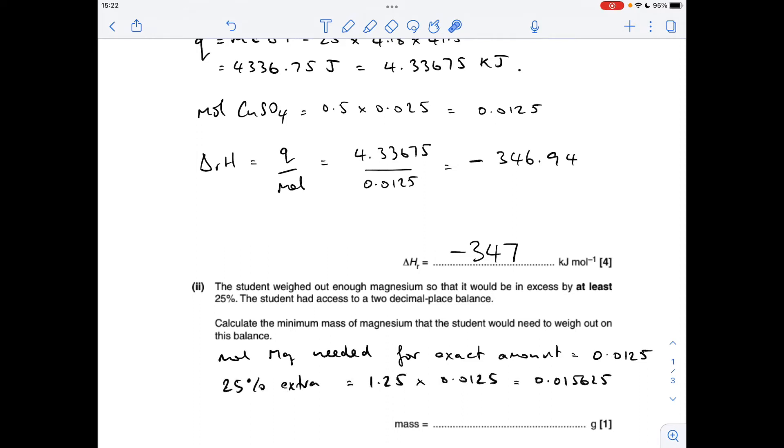So for the next part, there's a couple of ways you can do it. I've just gone for the sort of one-step method. So that's how many moles we need for there to be the exact amount. So if we need 25% extra, we need 1.25 times that. So that comes out to that many moles. The other way you could do it is work out 25% of that and then add that on to that. You still get that number anyway.